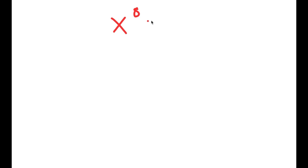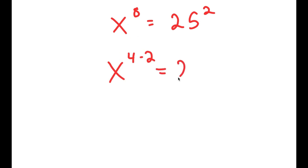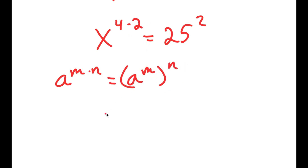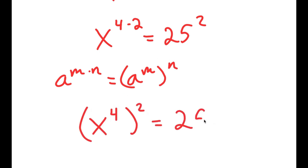In this video, I'm going to solve the equation x⁸ = 25². To solve this, I'm going to first rewrite this as x^(4×2) = 25². And if I have something in the form a^(m×n), this is equal to a^m raised to the power of n. So x^(4×2) equals (x⁴)², and this equals 25².